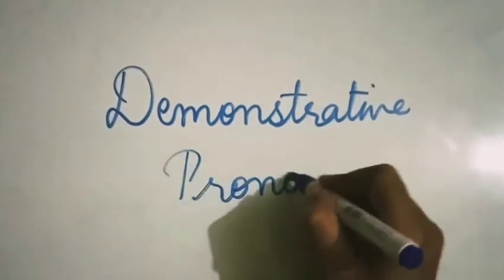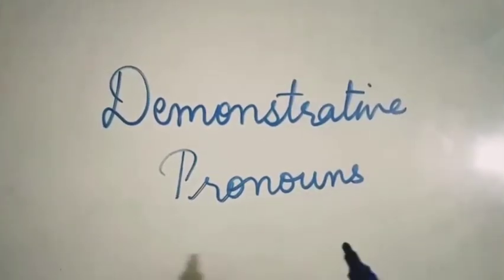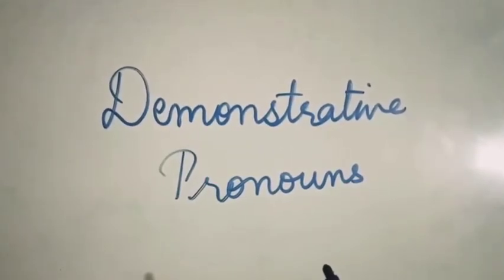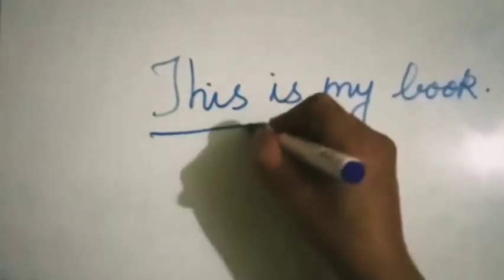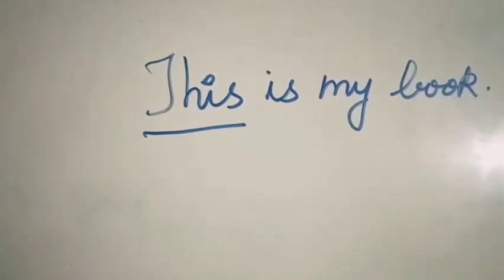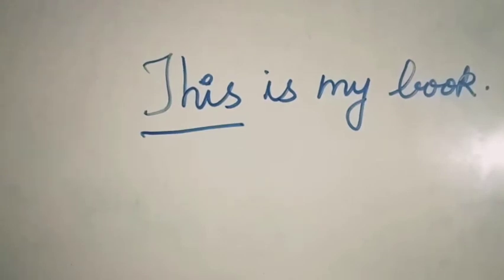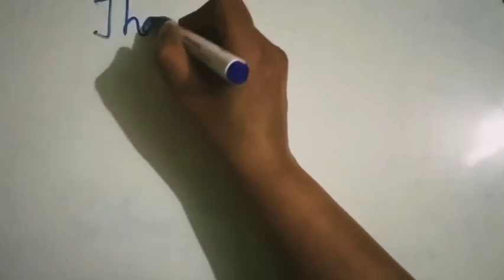'She can sing well.' Now, demonstrative pronouns. Demonstrative pronouns are used to point out or show something. For example: 'This is my book.' Here, 'this' is showing that the book belongs to me. So 'this' is a demonstrative pronoun. When something is nearby, we use 'these'.